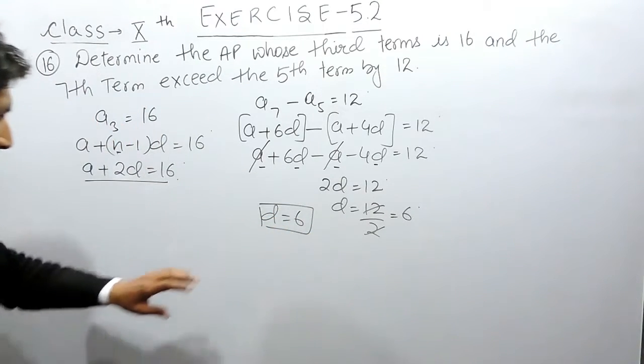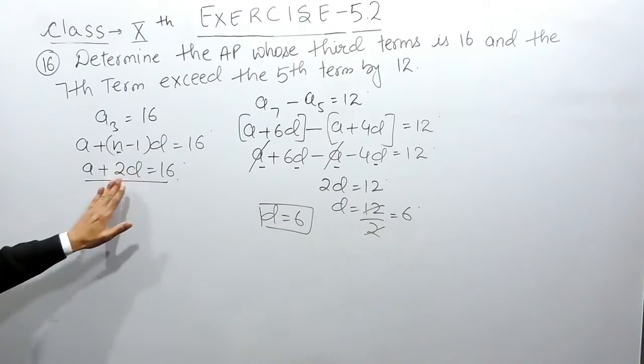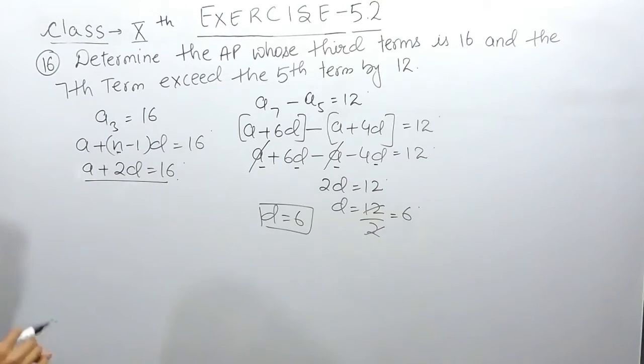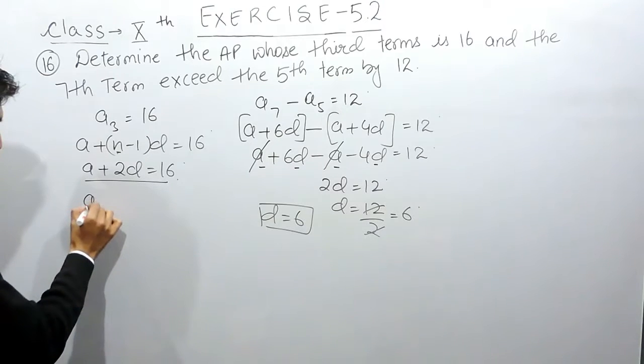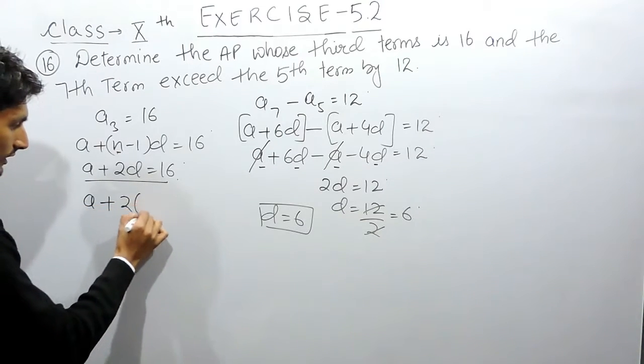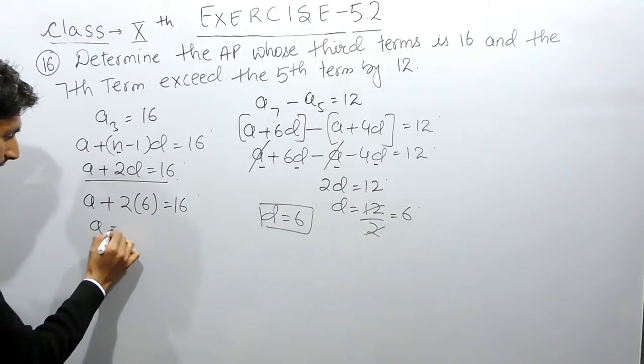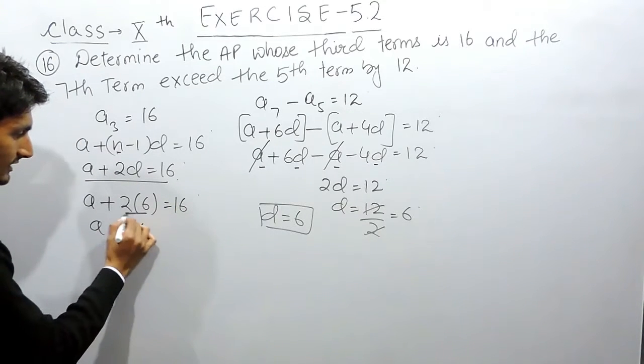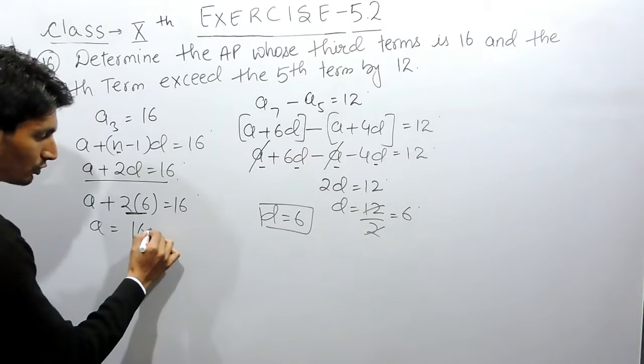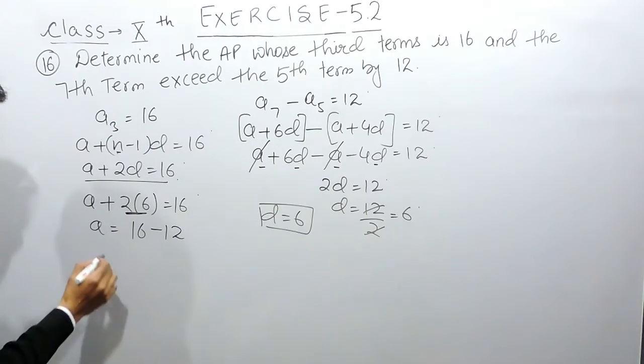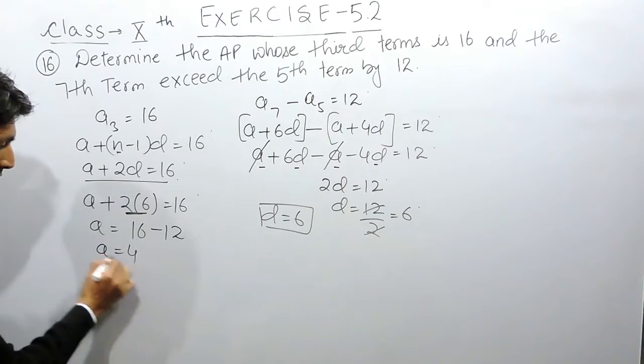Now if I substitute this value in the first equation, I will get the value of A. So the value of A here must be A plus 2 into 6 equals 16. A will be equal to 16, and this is 12, and this value when shifted to that side should be minus 12. So the value of A must be 4.